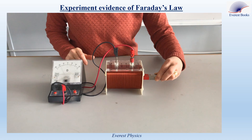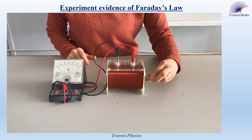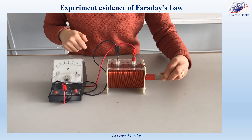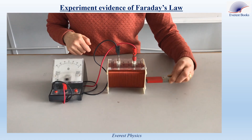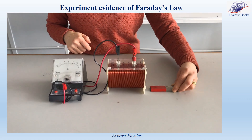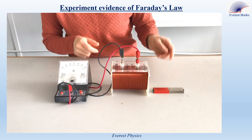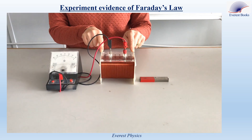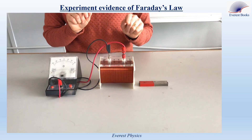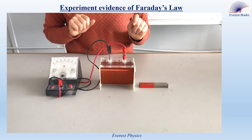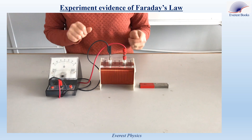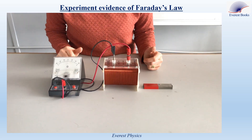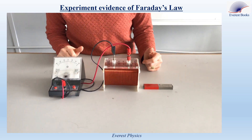We move the magnet beside the coil, and the needle is deflected in opposite directions. During the motion of the magnet, the coil is crossed by a variable magnetic flux, so it becomes the seat of induced electromotive force. So the circuit carries an electric current because it is closed.